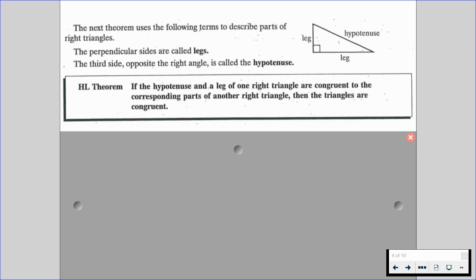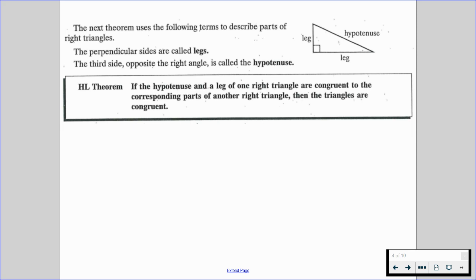So HL, also called hypotenuse-leg: if the hypotenuse and a leg of one right triangle are congruent to the corresponding parts of another right triangle, then the triangles are going to be congruent. We know we have a right angle, and we have this diagram right here. These two triangles would be congruent because of HL, because of hypotenuse-leg.